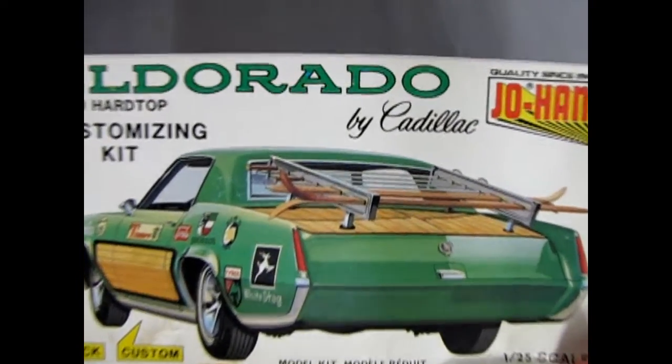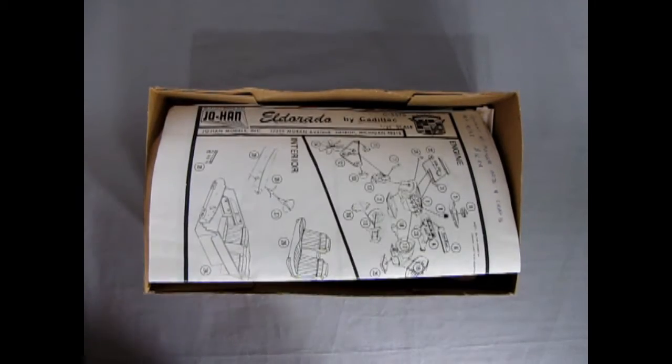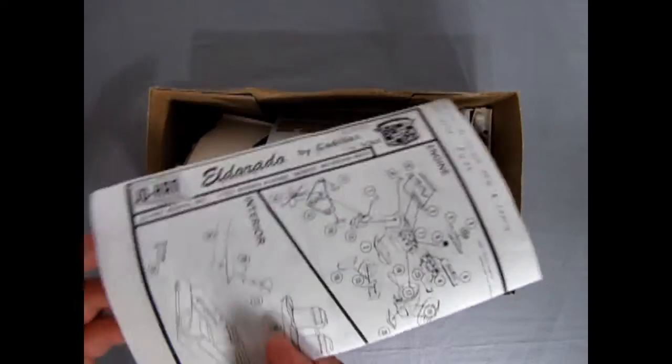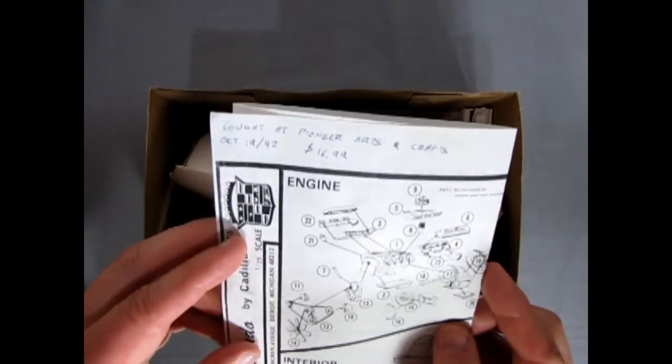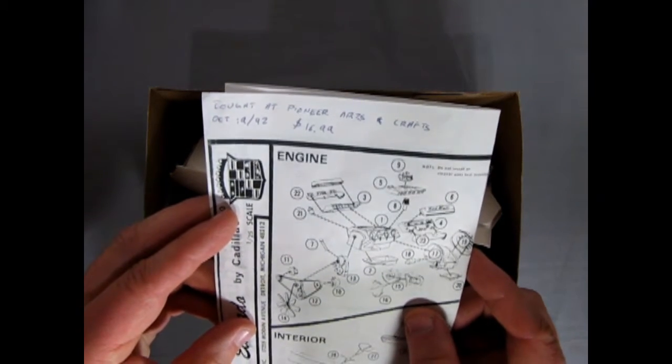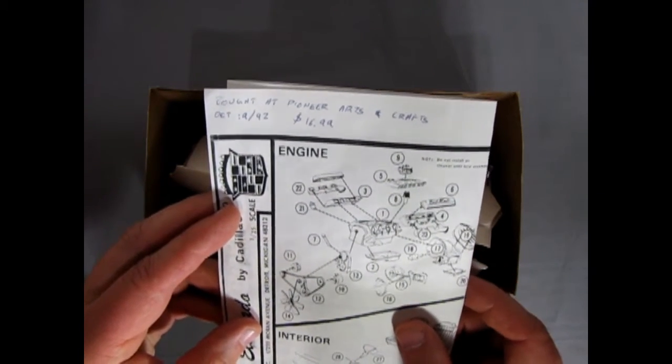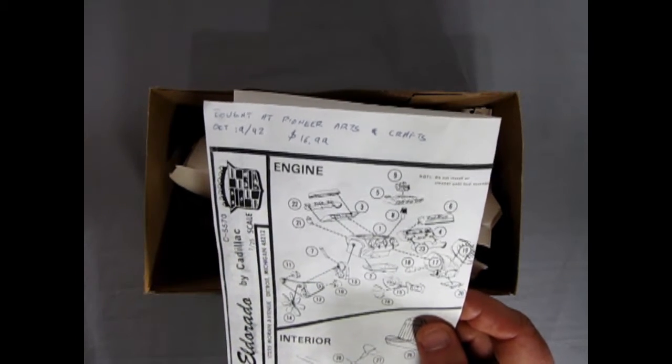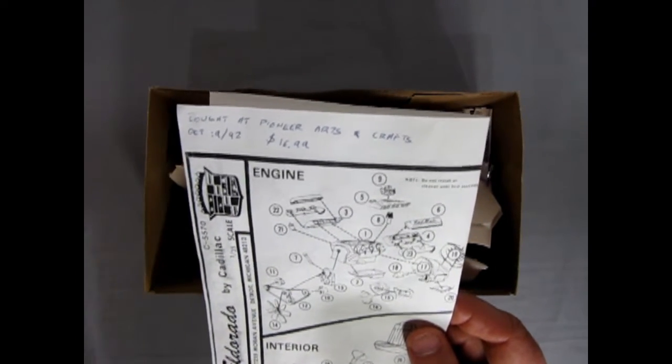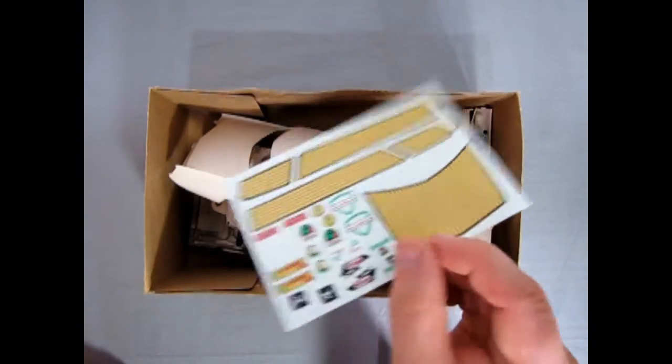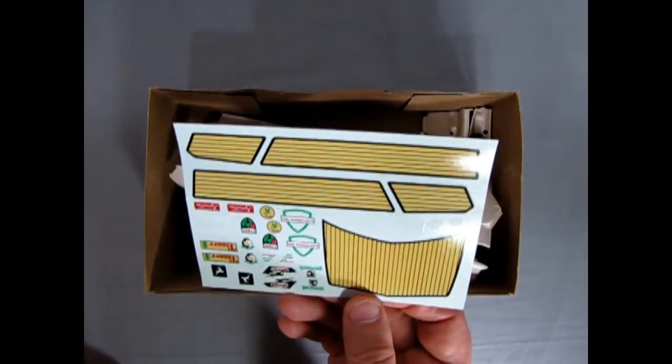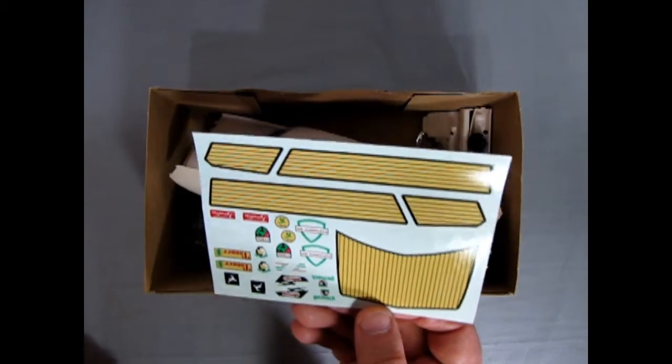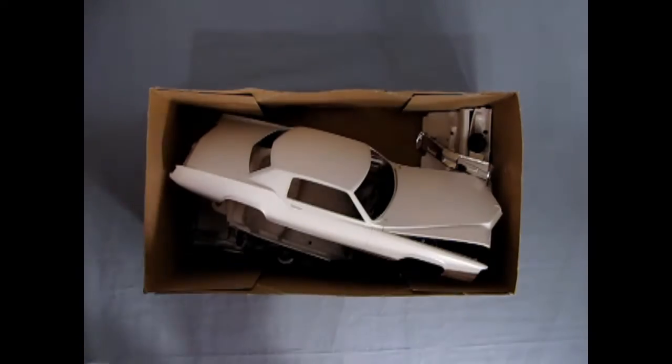So now we'll just pull the lid off the box. And first off we have our instructions. It says bought at Pioneer Arts and Crafts, October 19, 1992. I've had this a long time. For $16.99, which was considered pretty high back then. Okay, we'll take a look at those in a minute. There's our really cool looking decal sheet for the Alpine Ski Resort, Winter Ski Resort, I guess.